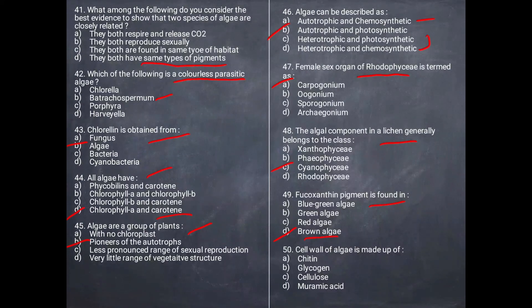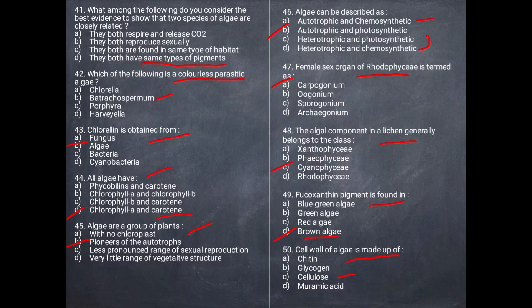Last question: The cell wall of algae is made up of what? The algae's cell wall is made up of cellulose. So these were the answer MCQs of algae, and I hope this is helpful for you.